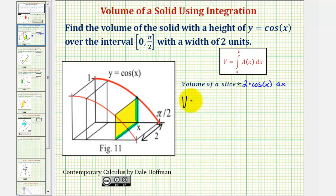The volume is going to be equal to the integral of two cosine x dx, integrated from zero to pi over two. And now we'll find the anti-derivative of two cosine x, which is equal to two sine x. And now we'll evaluate this at the upper and lower limits of integration.